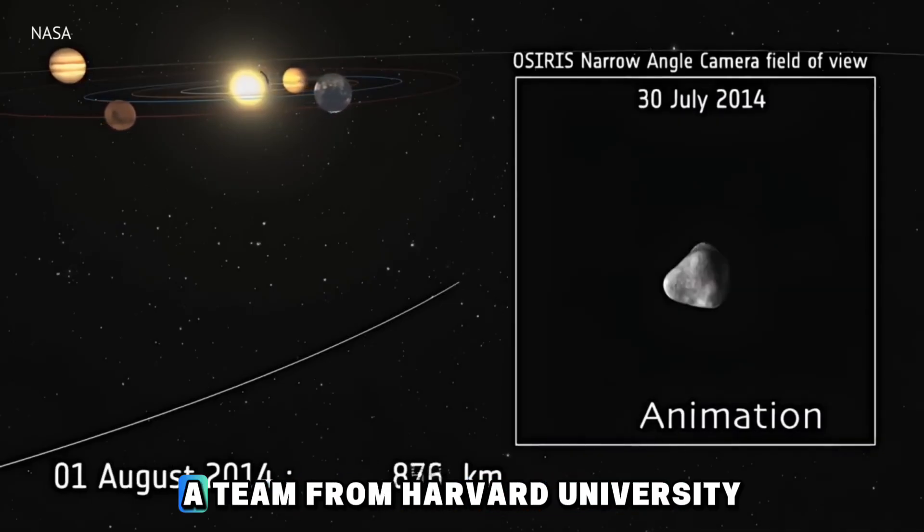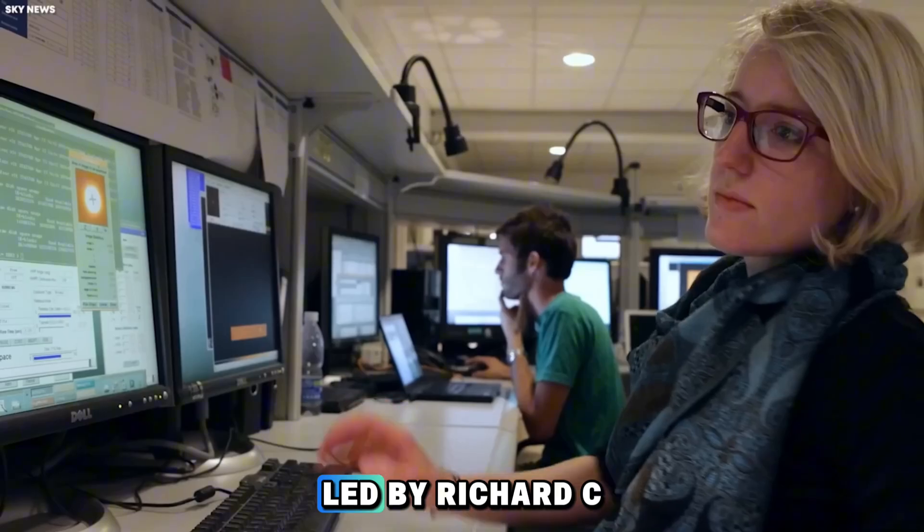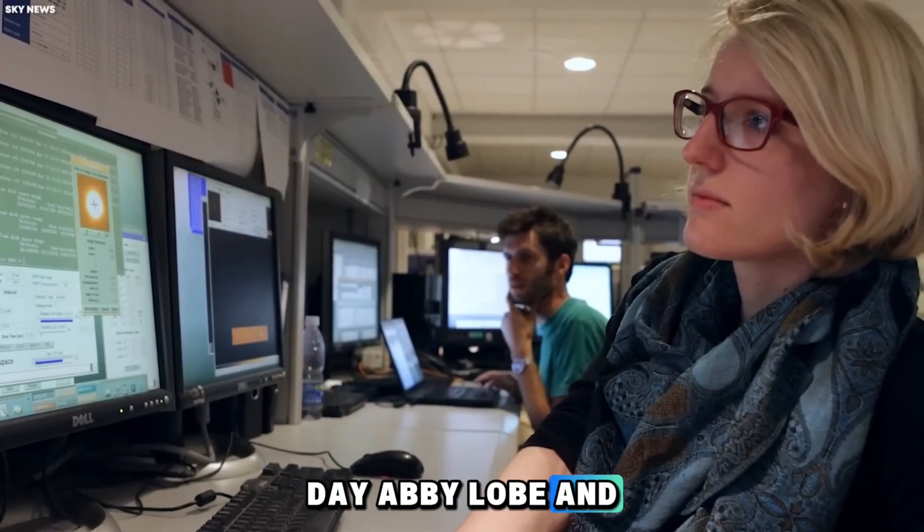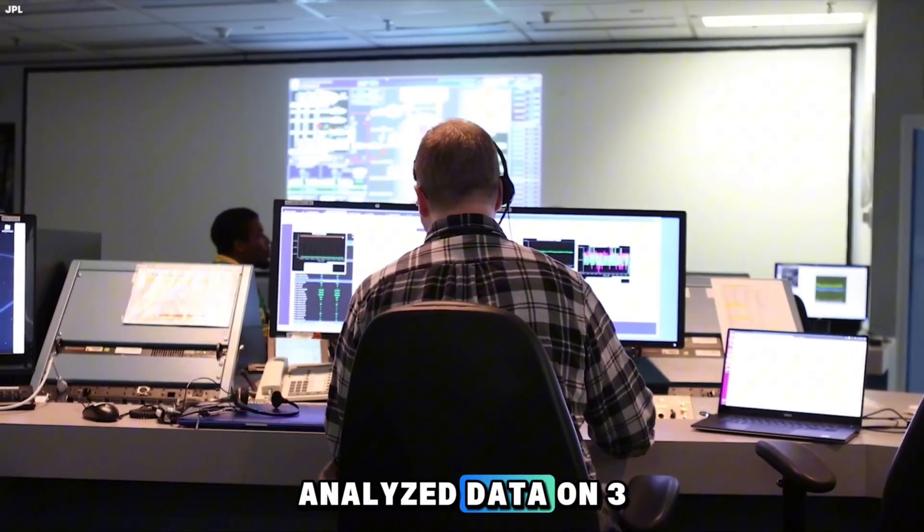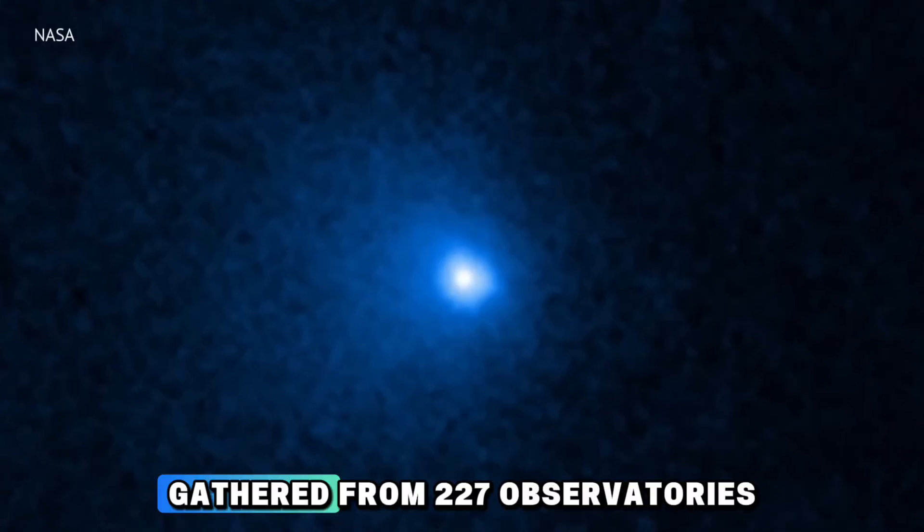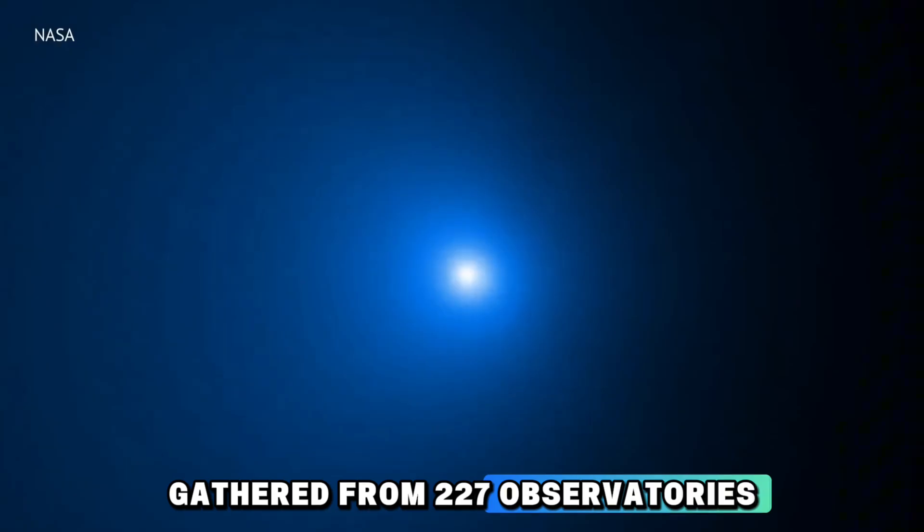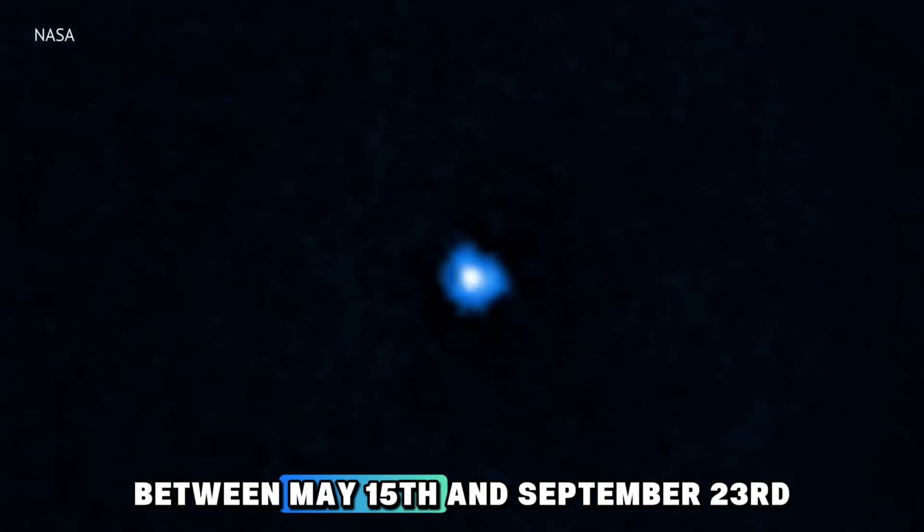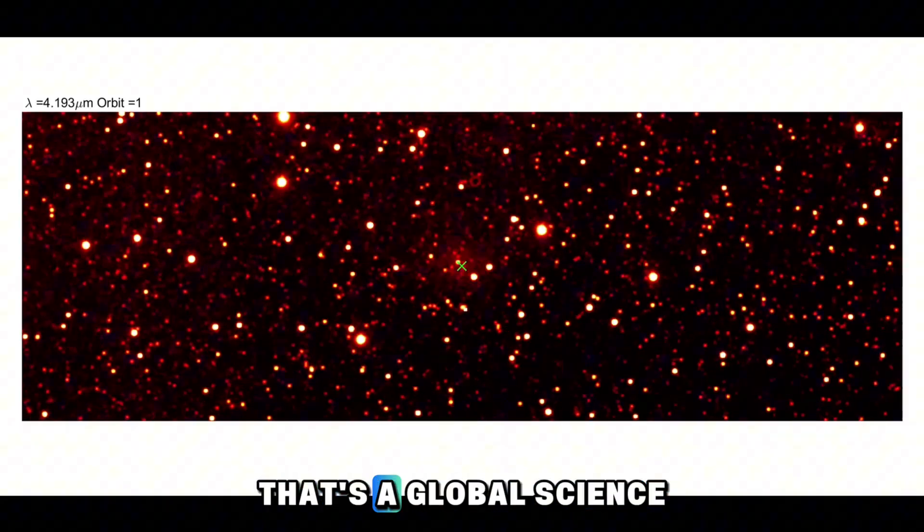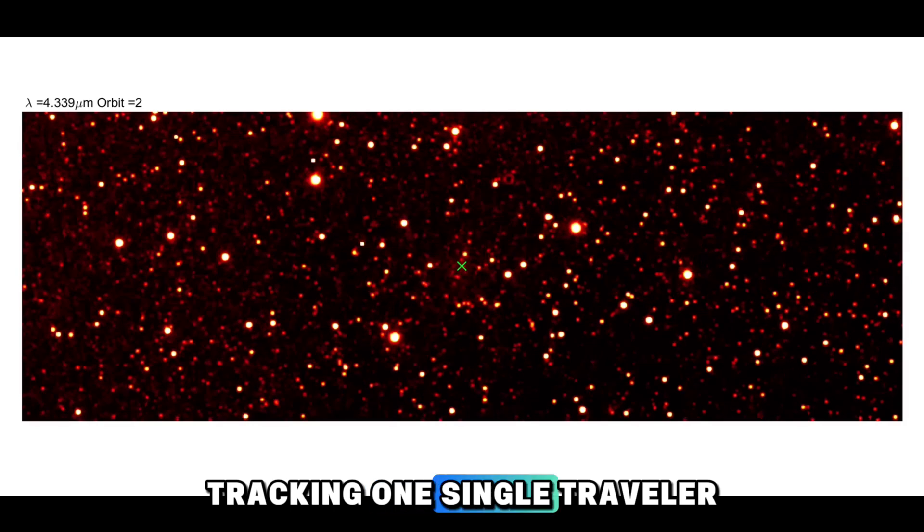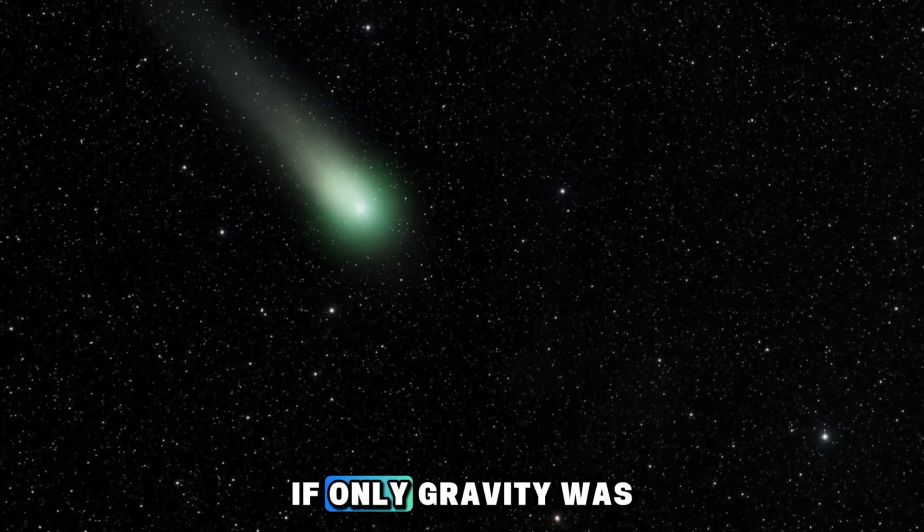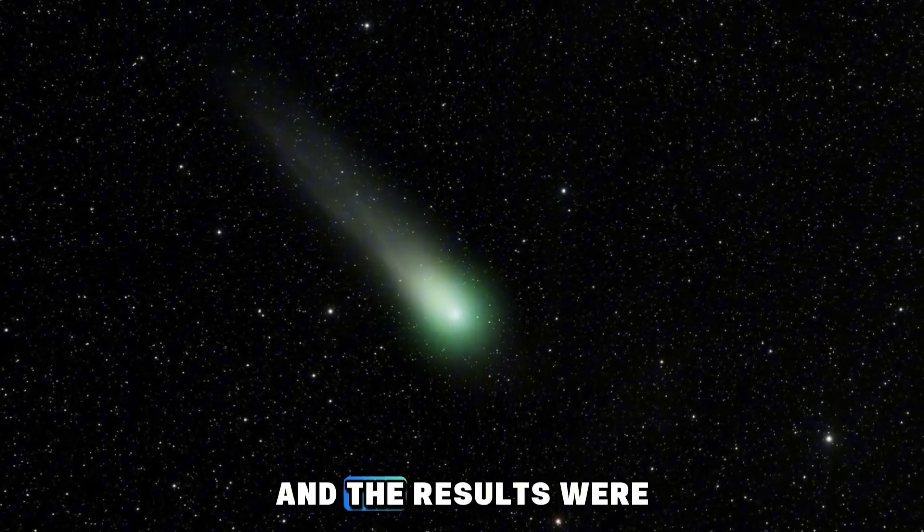To get real answers, a team from Harvard University, led by Richard Ciday, Avi Loeb, and Peter Resch, analyzed data on 3I Atlas, gathered from 227 observatories worldwide between May 15th and September 23rd. That's a global science squad tracking one single traveler from the depths of space. They fed all this data into the minor planet center and compared the object's actual movement to what would happen if only gravity was pulling on it. And the results were shocking.